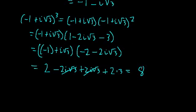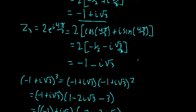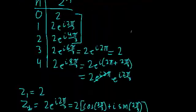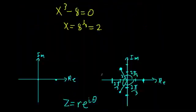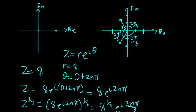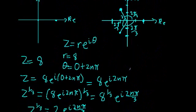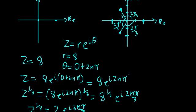So we found that if we cube this complex number, we do in fact get 8 — confirming it is the cube root of 8. We were able to find all three cube roots of 8: the one real solution and the two complex ones. We'll carry this on with another example in the next video.